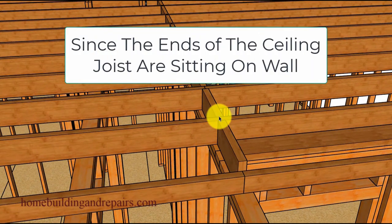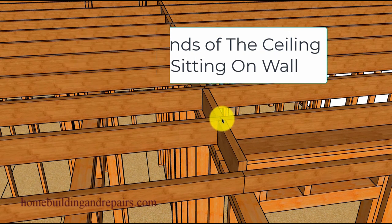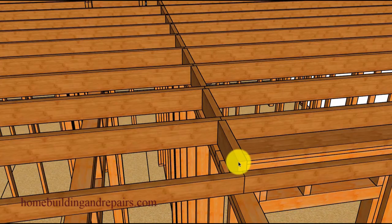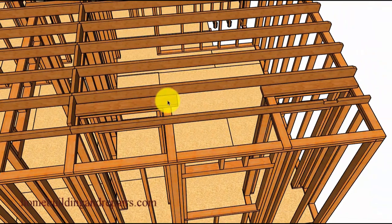If you notice here, we did not lap the ceiling joist - we butt them over the wall and we're going to install some straps so that we can get a nice solid rafter tie connection. You will also need to block these joints over the walls and install backing for the drywall.